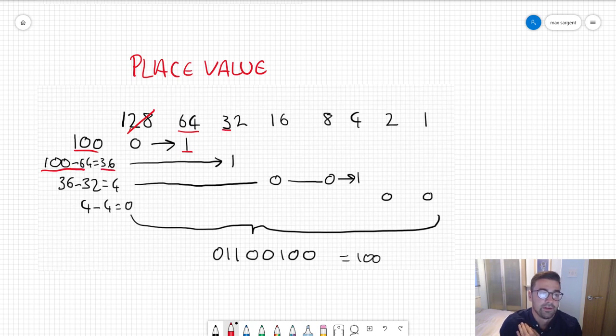We look at the next place value, 32. Okay yep, we can do that. Write another 1. 36 minus 32 equals 4. Then we move along again. We can't do 16, we can't do 8. 4, well that's exactly equal to what we've got left. So 4 minus 4 equals 0, write another 1.